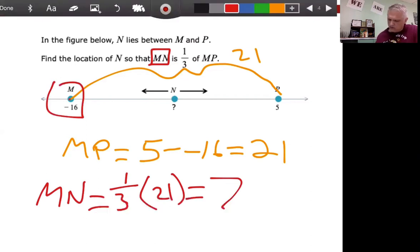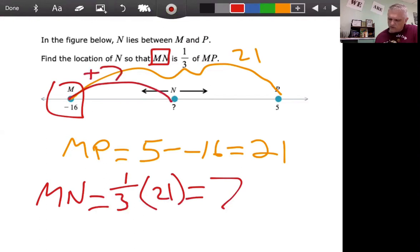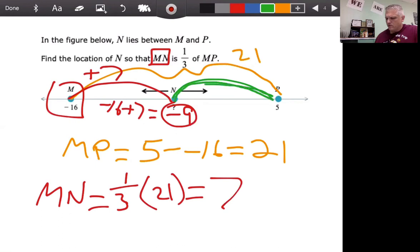I need to, therefore, jump seven units to the right because the picture shows that N is on the right. So, negative 16 plus seven tells me that N is going to be at the point negative nine. So, let's just check our answer here for a second. NP, from negative nine to five. Well, five subtract negative nine is 14 units. So, seven is one-third of the entire distance from M to P. And 14 is double the seven. So, seven and 14 add up to 21. Seven is one-third of it. Fourteen is two-thirds of it. The numbers check out. Pretty sure they're right.